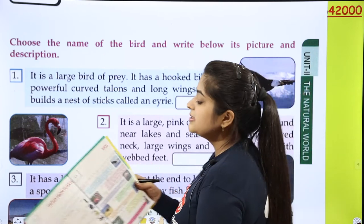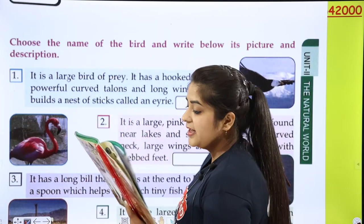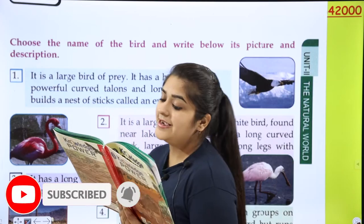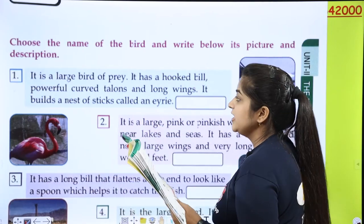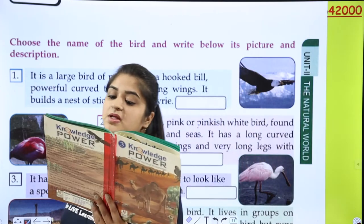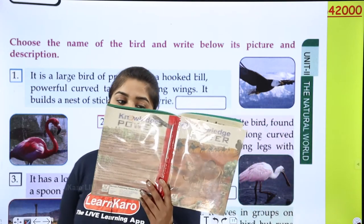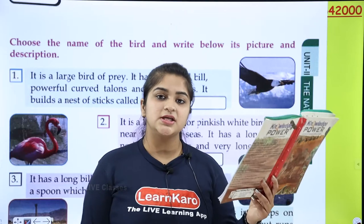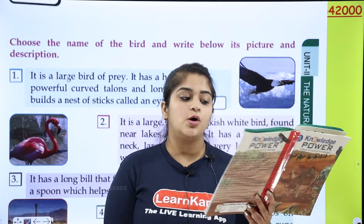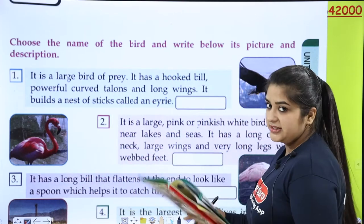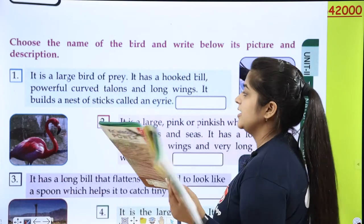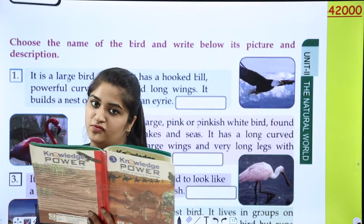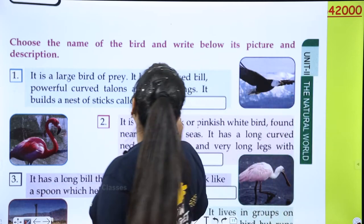Number 1. It is a large bird of prey. It has a hooked beak, powerful curved talons and long wings. It builds a nest of sticks called an aerie. So this bird of prey has a hooked beak, powerful curved talons and long wings. And the name of the bird is eagle.